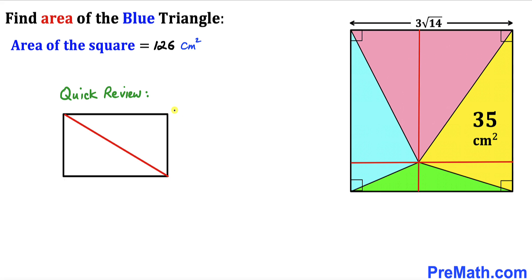Let me go over a basic concept. In a rectangle, the main diagonal divides it into two equal, congruent triangles. If the area of one triangle is A, then the area of the other is A as well. Let's apply this concept to our problem.